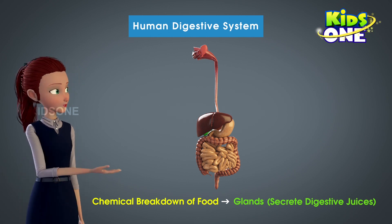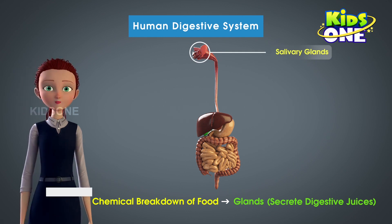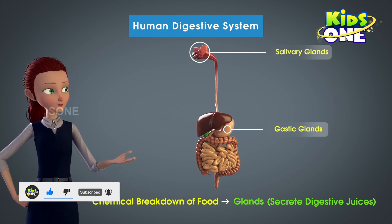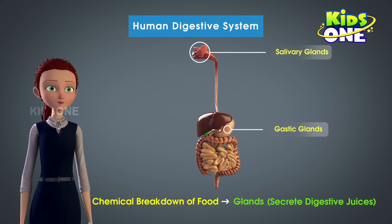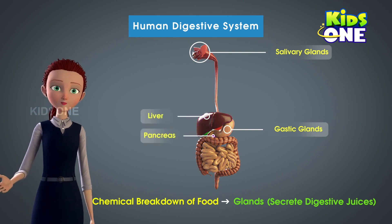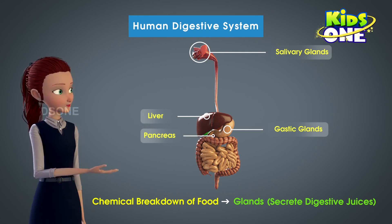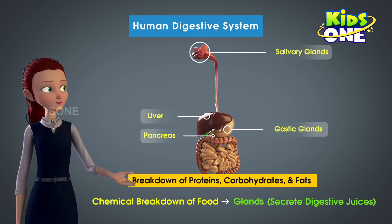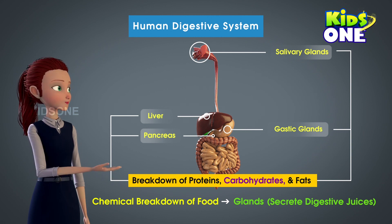The glands at the beginning of the alimentary canal are the salivary glands. Next on the list are the gastric glands on either side of the stomach. Then come the next two glands that are placed just above the stomach — the liver and the pancreas. These four glands help in the process of digestion by secreting enzymes which break down complex food substances like proteins, carbohydrates, and fats.